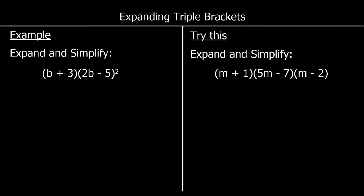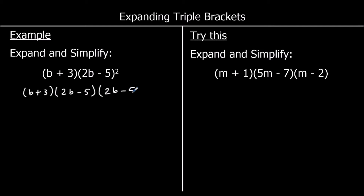Another example. This time we've got a coefficient of b, and one of the brackets is squared. So we've got (b + 3)(2b - 5) squared. When a bracket is squared, that means it's multiplied by itself. So we can rewrite this as (b + 3)(2b - 5)(2b - 5). And we're going to follow exactly the same process — expand and simplify two of the brackets first, then do another expansion afterwards.